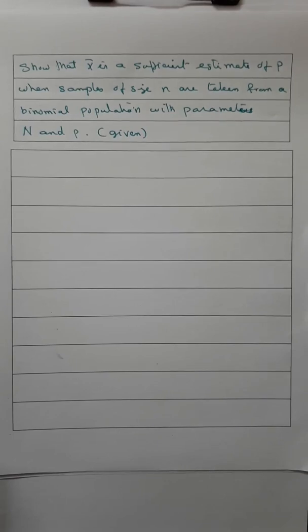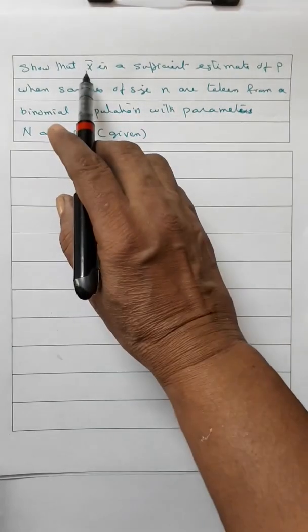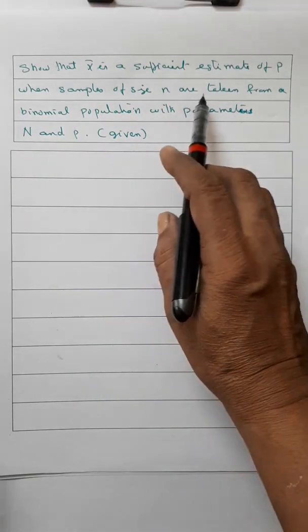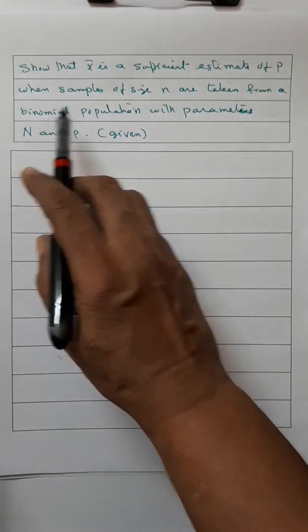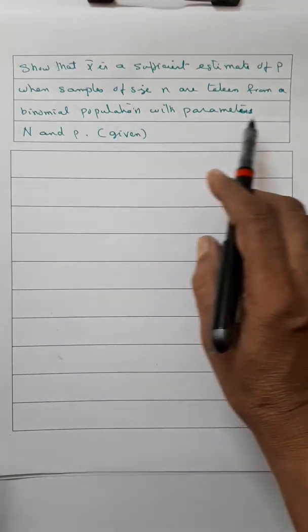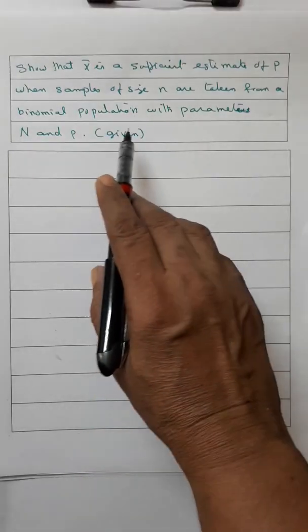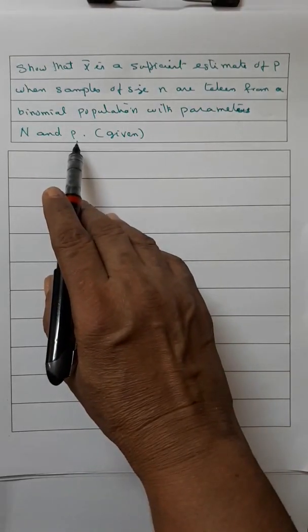Welcome to Sujitra Statistics Classes. Today we are going to discuss one problem from sufficient estimation: Show that x-bar is a sufficient estimate of p, when a sample of size n is taken from a binomial population with parameters n and p, and n and p are given.